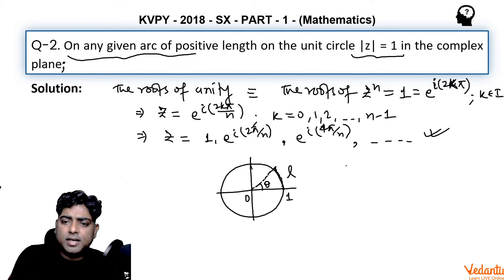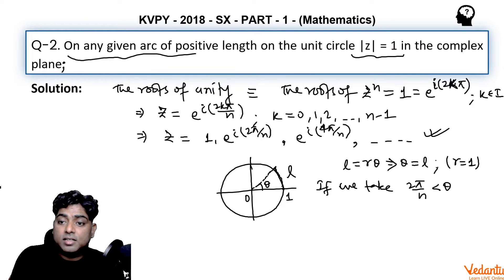Now considering let the given arc to be l, and that arc is making some angle suppose theta at the center. So here we can say, as radius is 1, r is equal to 1, l is equal to r into theta. R is 1 so it is equal to theta. This implies theta is equal to l, as r is equal to 1.